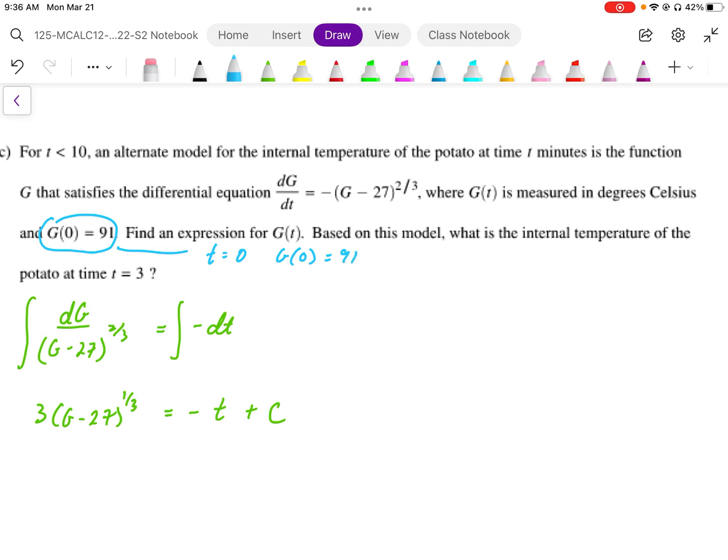Plugging that into our equation, we end up with 3 times, G was 91 minus 27, cube root that, is equal to negative, well t is 0, plus C. So solving for plus C, we're going to end up with 3 times, this is going to be 91 minus 27, that's going to give us, looks like, 64.